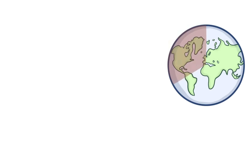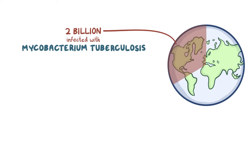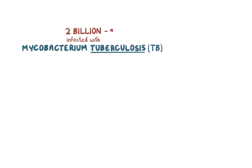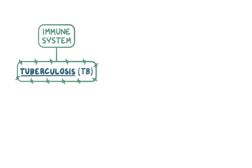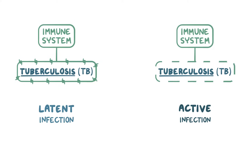It's estimated that about 2 billion people worldwide are infected with mycobacterium tuberculosis, often just shortened to tuberculosis, or simply TB. 2 billion is a ton of people, but even though they're infected, that doesn't mean that all these people have symptoms. The vast majority, about 90-95%, aren't even aware that they're infected, because usually the immune system can contain it such that it's not able to multiply. It often remains latent or dormant as opposed to active, which usually causes symptoms and can be spread to others.